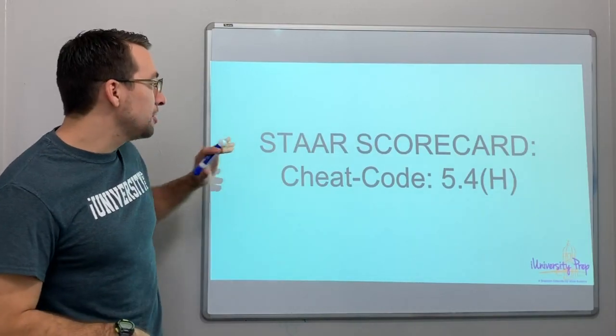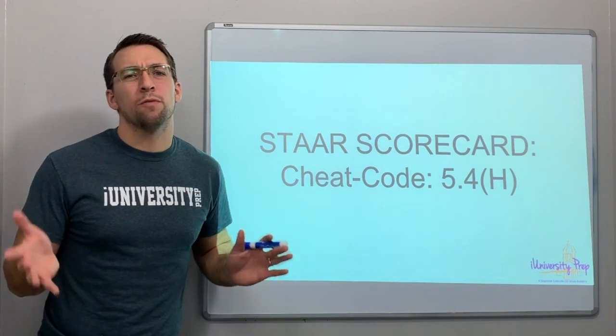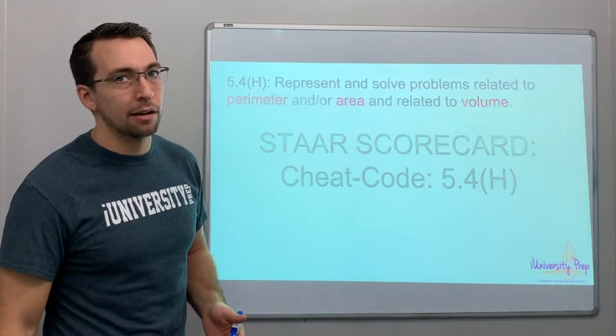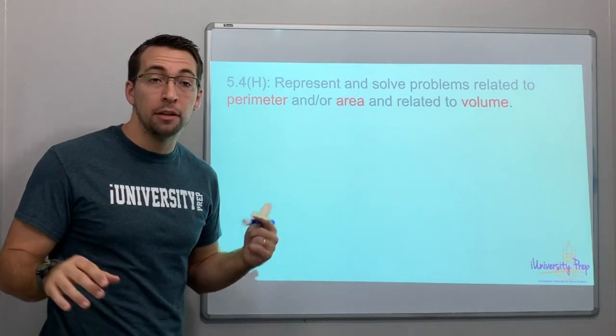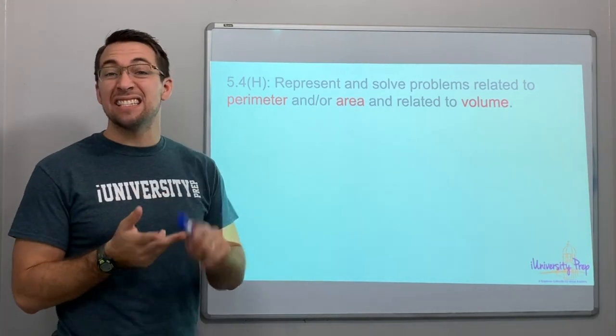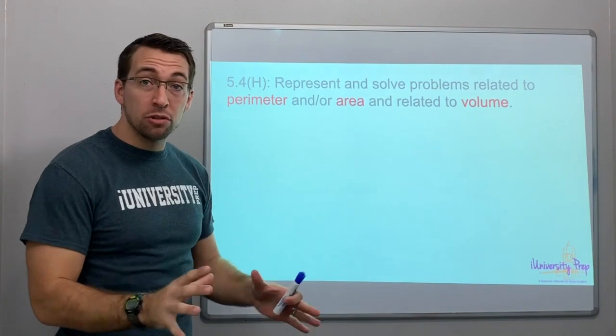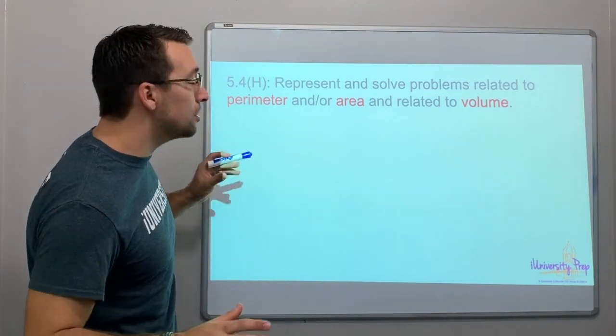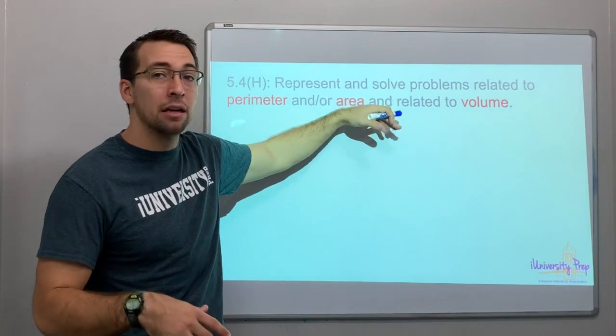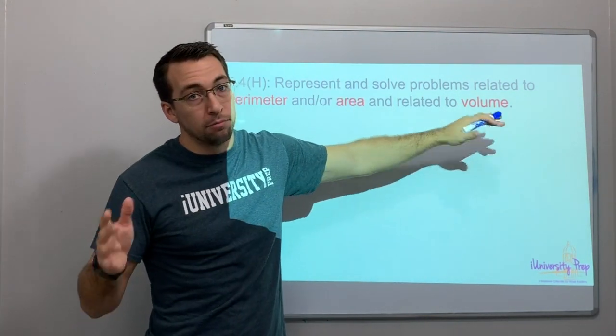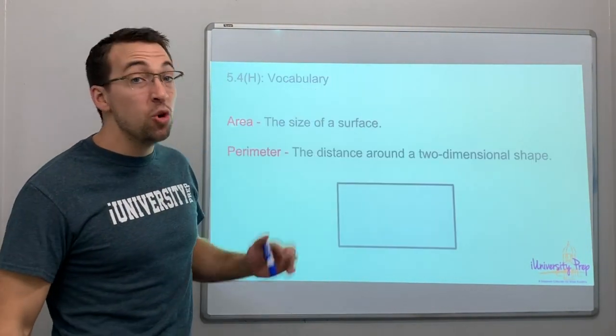Hello everyone, STAAR scorecard cheat code 5.4H. This is my favorite type of math - geometry. I love shapes, lines, angles, and figures. This whole cheat code is about perimeter, area, and volume, talking about two-dimensional and three-dimensional figures.